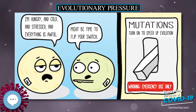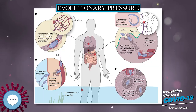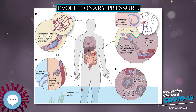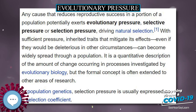However, not all human activity that causes an evolutionary pressure happens unintentionally. This is demonstrated in dog domestication and the subsequent selective breeding that resulted in the various breeds known today.